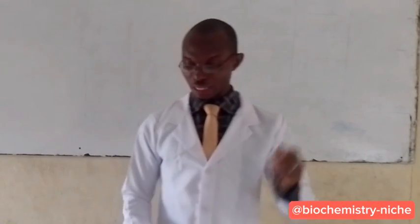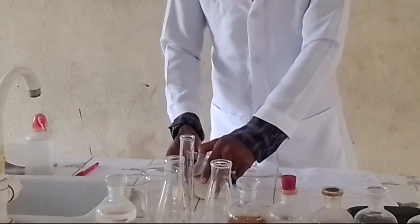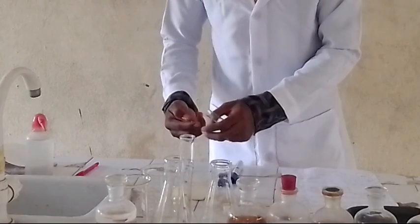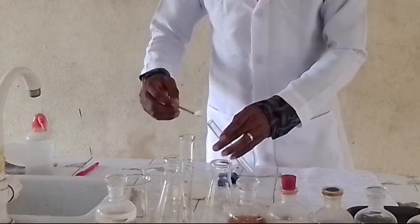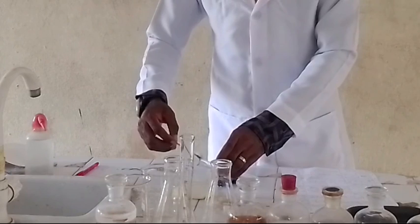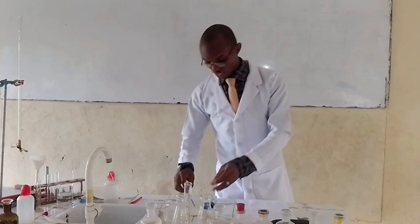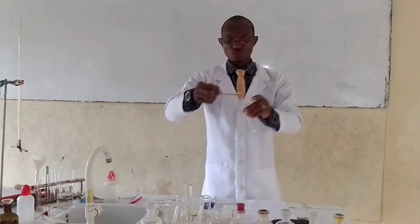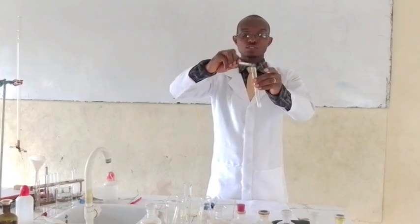I am going to take some samples of Sample C into my test tube. I am taking a spatula of Sample C and adding it into my test tube. We can see Sample C in the test tube. Let me just add a little more. I now have Sample C added into the test tube.